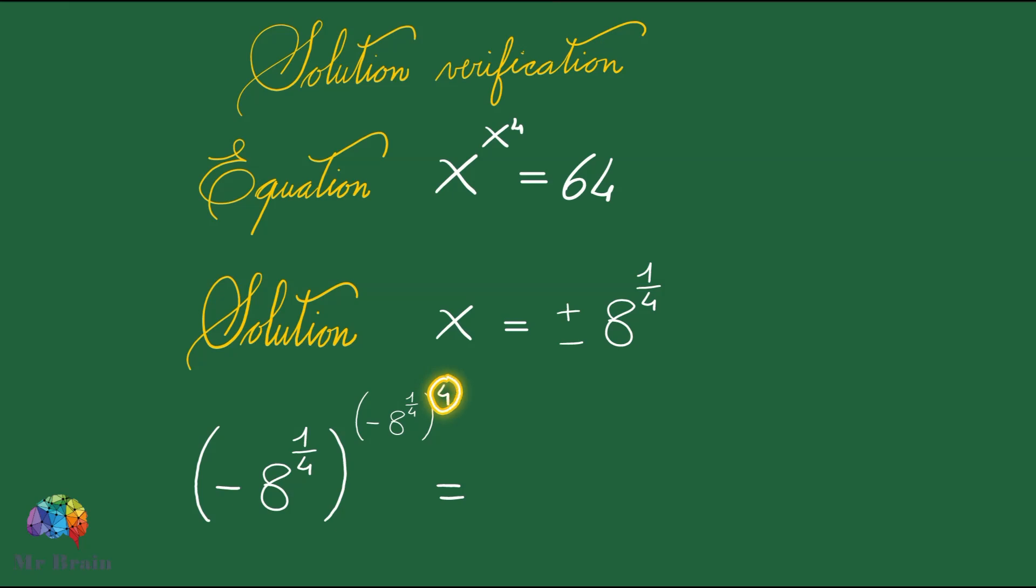A negative number raised to the fourth power returns a positive number. We apply the powers of powers property and multiply the exponents. Again, we apply the powers of powers property and multiply the exponents.